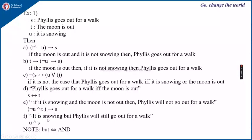Next is: it is snowing but Phyllis will still go out for a walk. It is snowing means it is U, and Phyllis will go for a walk is S. Here but is equivalent to AND, so it is U and S.